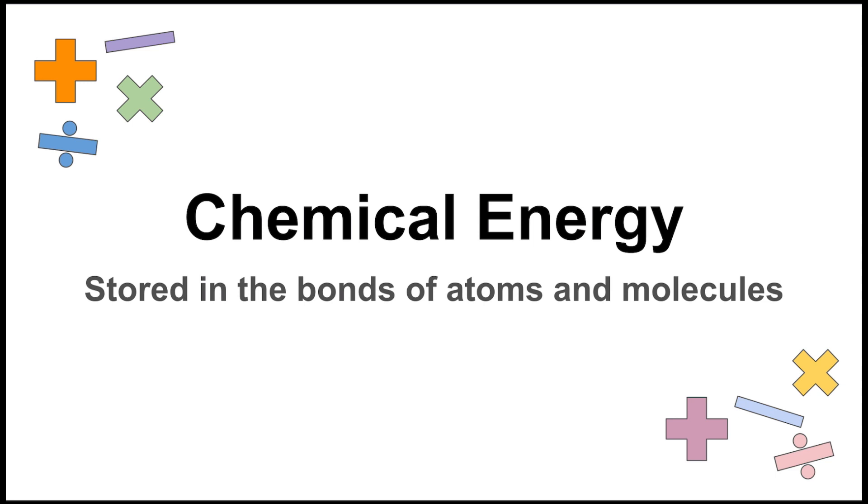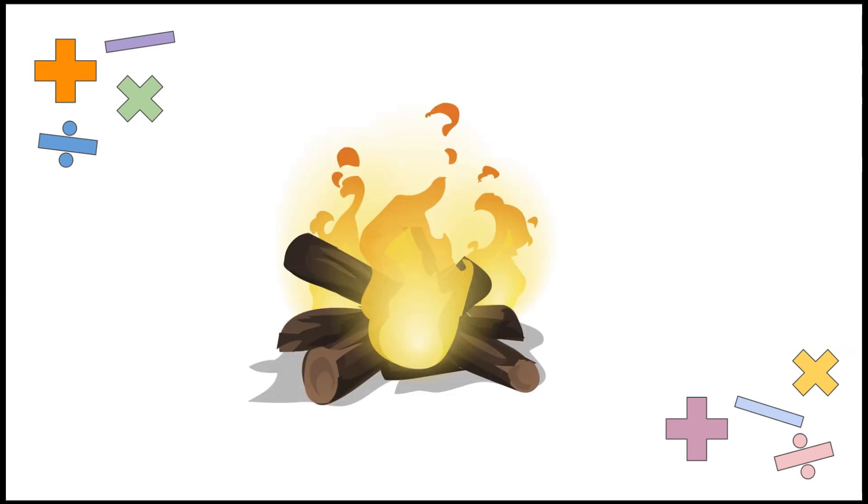Then there is chemical energy, which is stored in the bonds between atoms and molecules. In turn, it is a form of potential energy. As an example, when wood is burned, chemical energy is released. We can see this through the heat of fire.